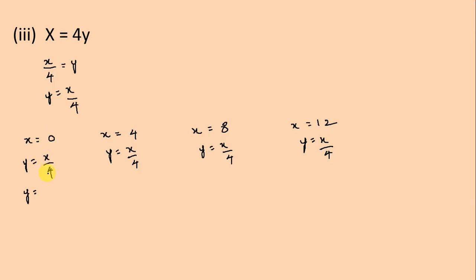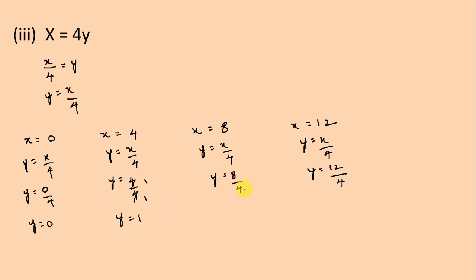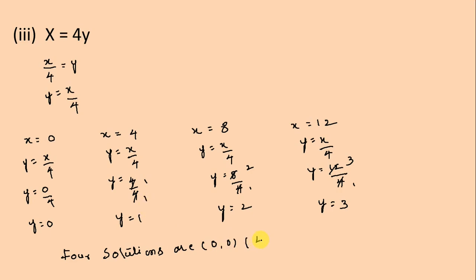We put the values of x: 0÷4=0, 4÷4=1, 8÷4=2, 12÷4=3. So y is equal to 0, 1, 2, and 3 respectively. Therefore the 4 solutions are (0,0), (4,1), (8,2), and (12,3). This is the second question of exercise 10.2.